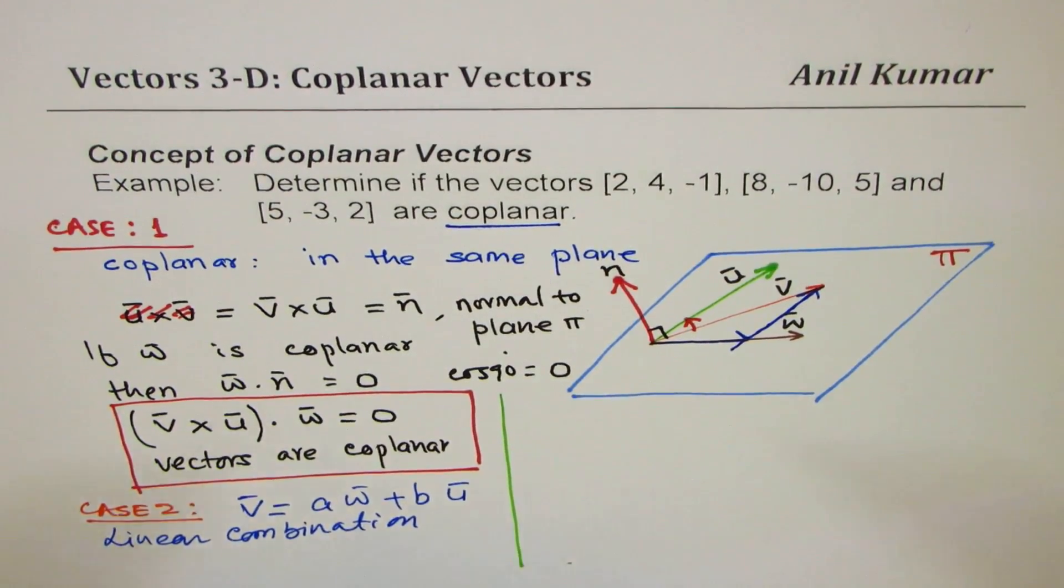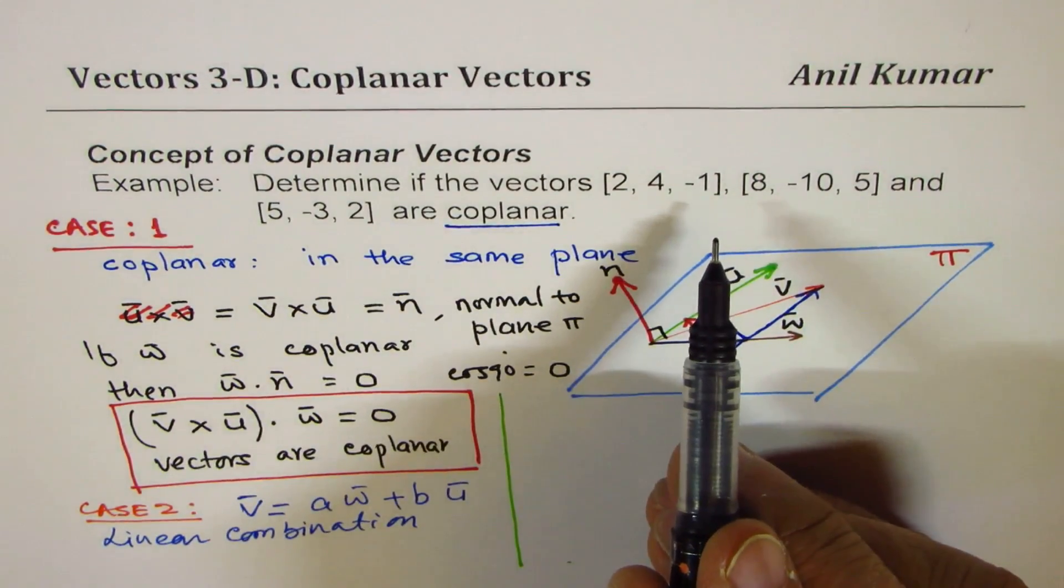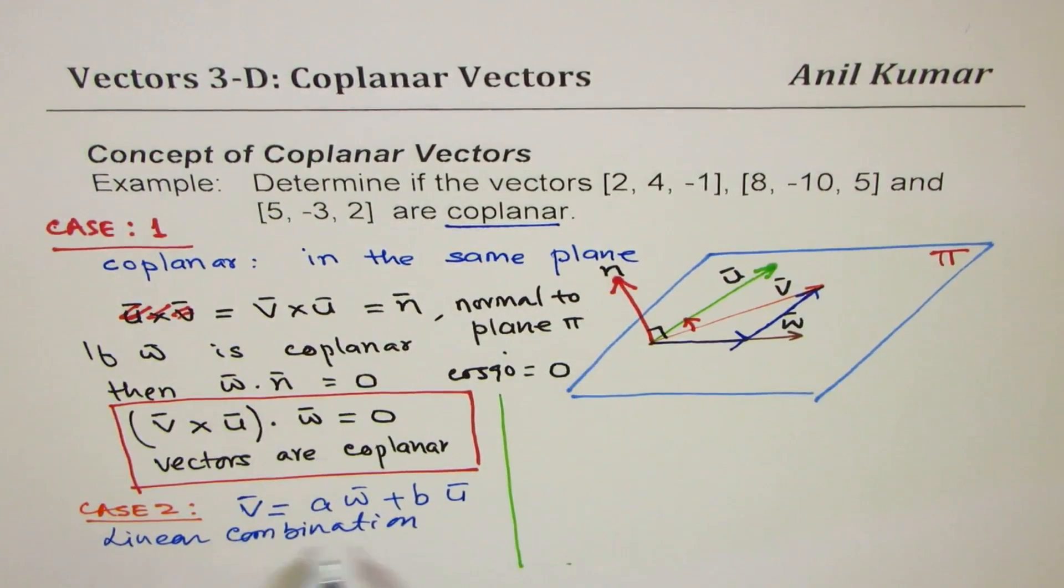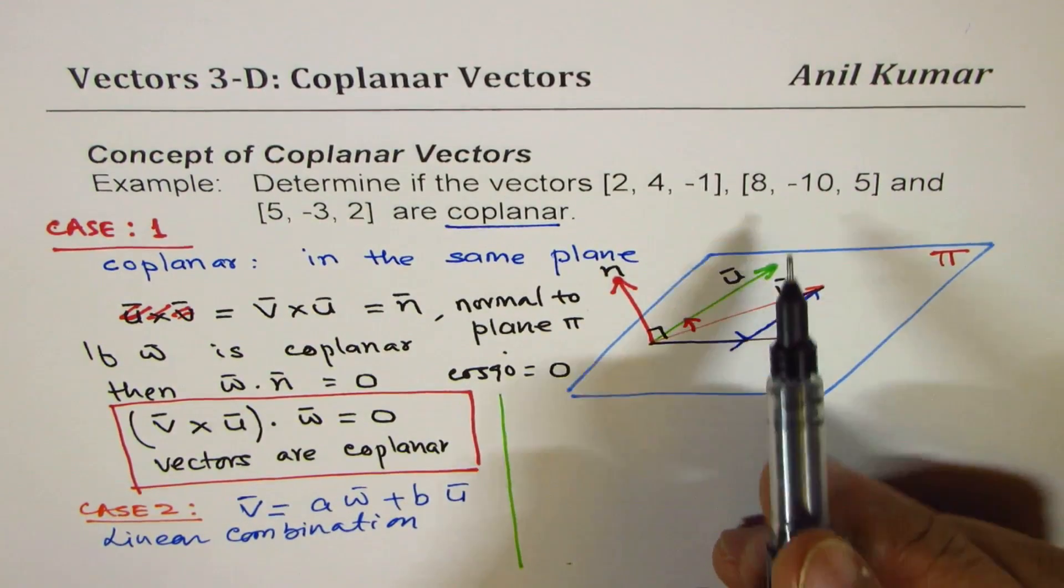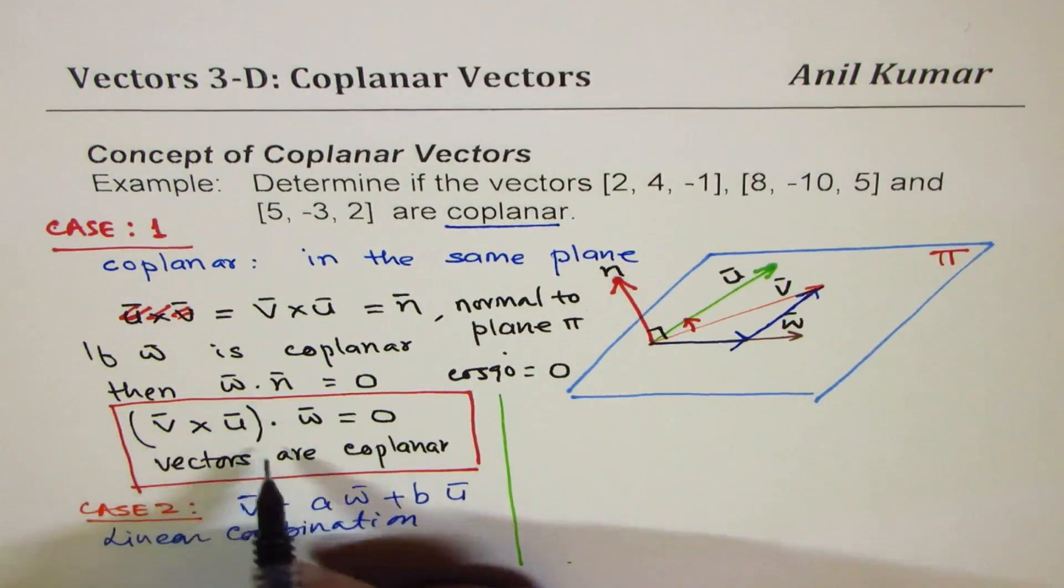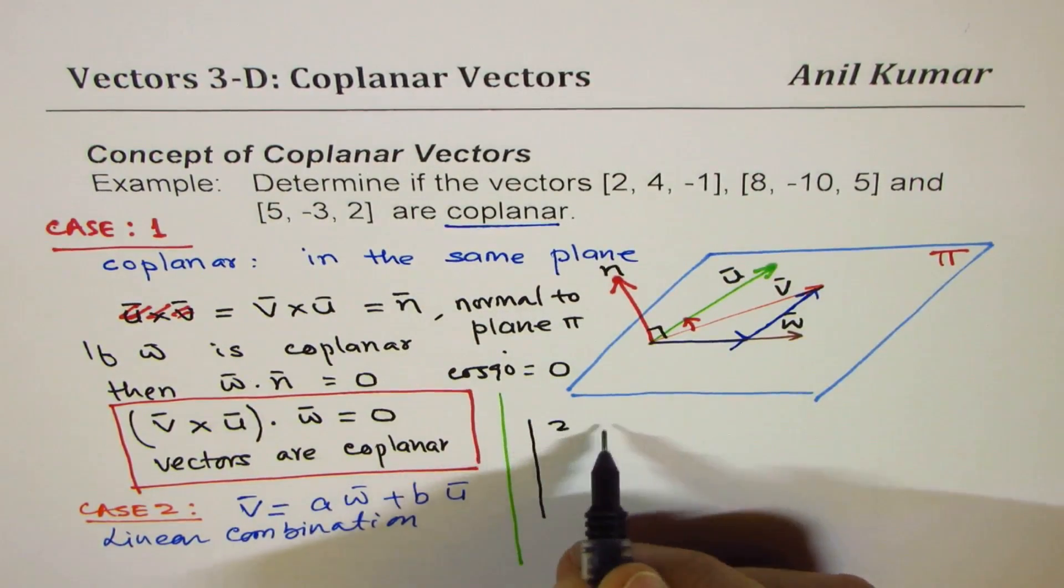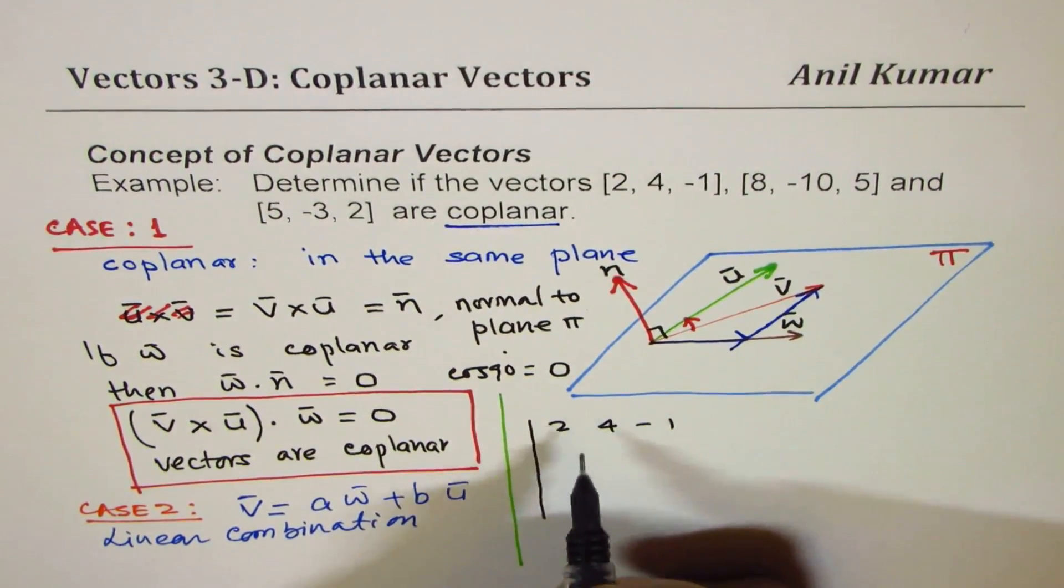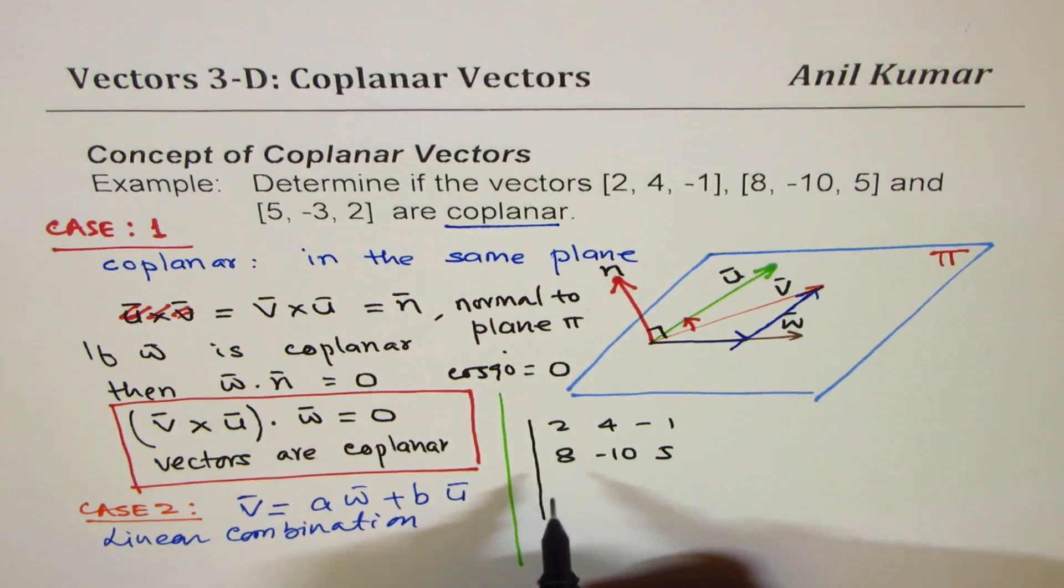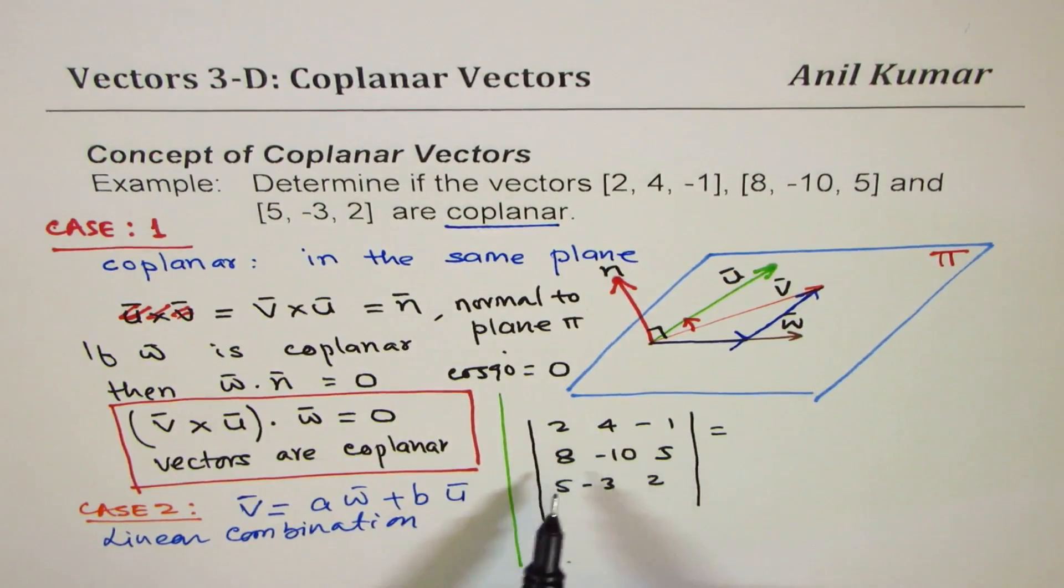So this is another way of showing that the three vectors are coplanar. That is how you could actually explain about the coplanar vectors. Now, in this space, I will do the first part, which is, we'll find the scalar triple product of these vectors. And then, in the next page, in the same video, I will show you how we can write one vector as a combination of other two.